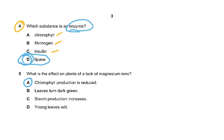Question 5: What is the effect on plants of lack of magnesium? Magnesium is needed for the chlorophyll, so chlorophyll production is reduced. Leaves turn pale green, in fact, and starch production decreases. Young leaves wilt? No, wilting is because of water loss, water loss is more than water uptake. Only then will something wilt.